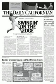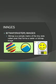The second component is images. We have bitmap images and vector images. Bitmap images are formed based on pixels. Pixels are small square boxes arranged in rows and columns as a matrix. So a bitmap is a simple matrix of tiny dots called pixels that forms a raster or bitmap image.